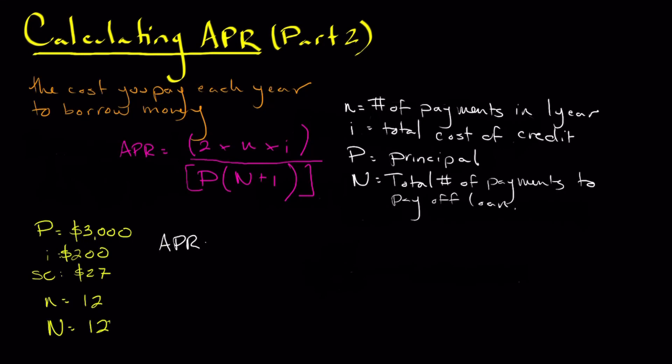So let's go ahead and start filling this in. So the first thing we're going to do is fill in the top part of the formula. That's going to be 2 times 12 times, well, we have to figure out something real quick. So we know that i is the total cost of credit.